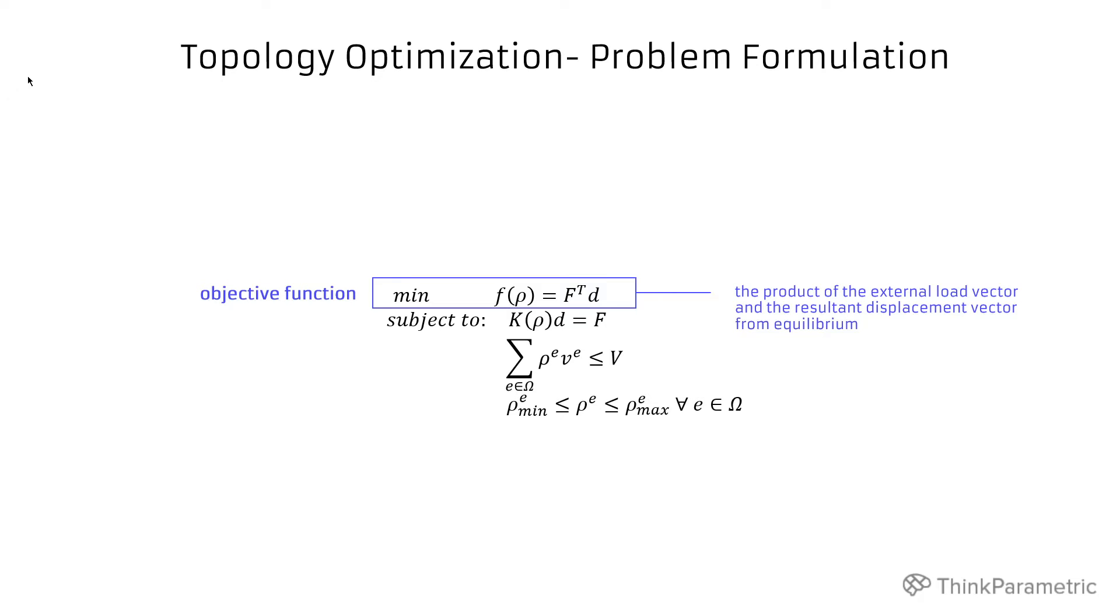An objective function tries to minimize compliance. Compliance is a product of external load vector and the resultant displacement vector. So basically it tries to find a configuration when all the displacements of the single elements are minimized under external loads. At the same time it means we want to design the stiffest possible structure. Minimum compliance problem is equal to maximum stiffness problem.